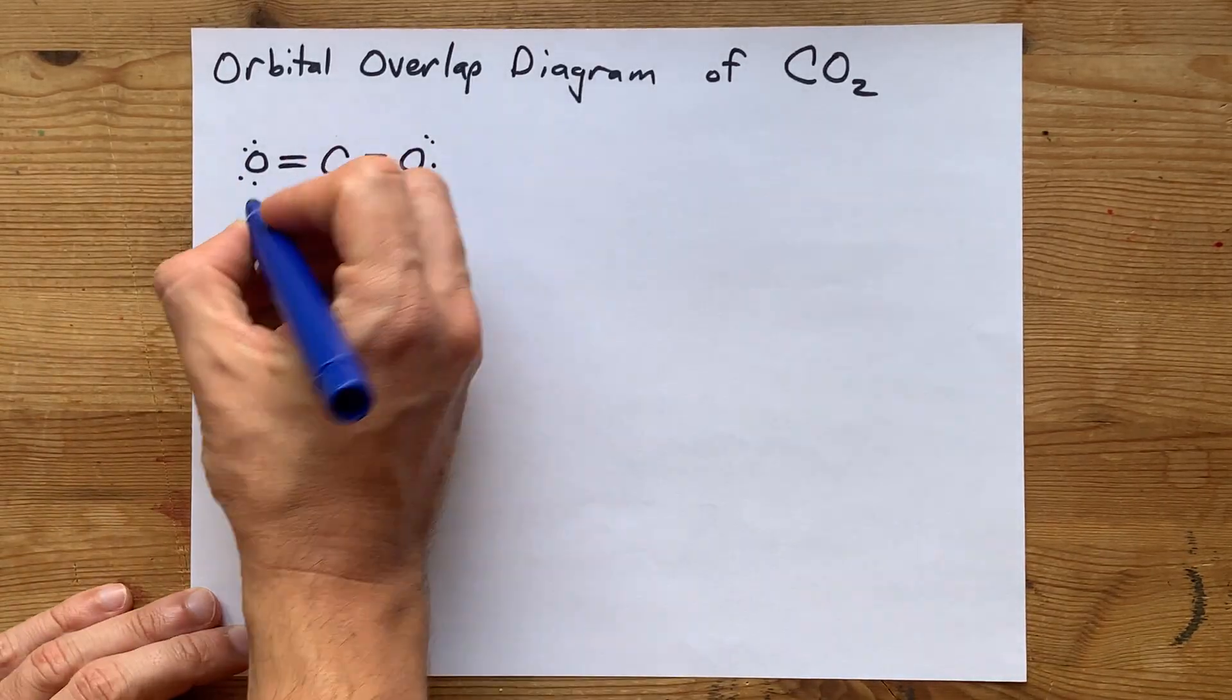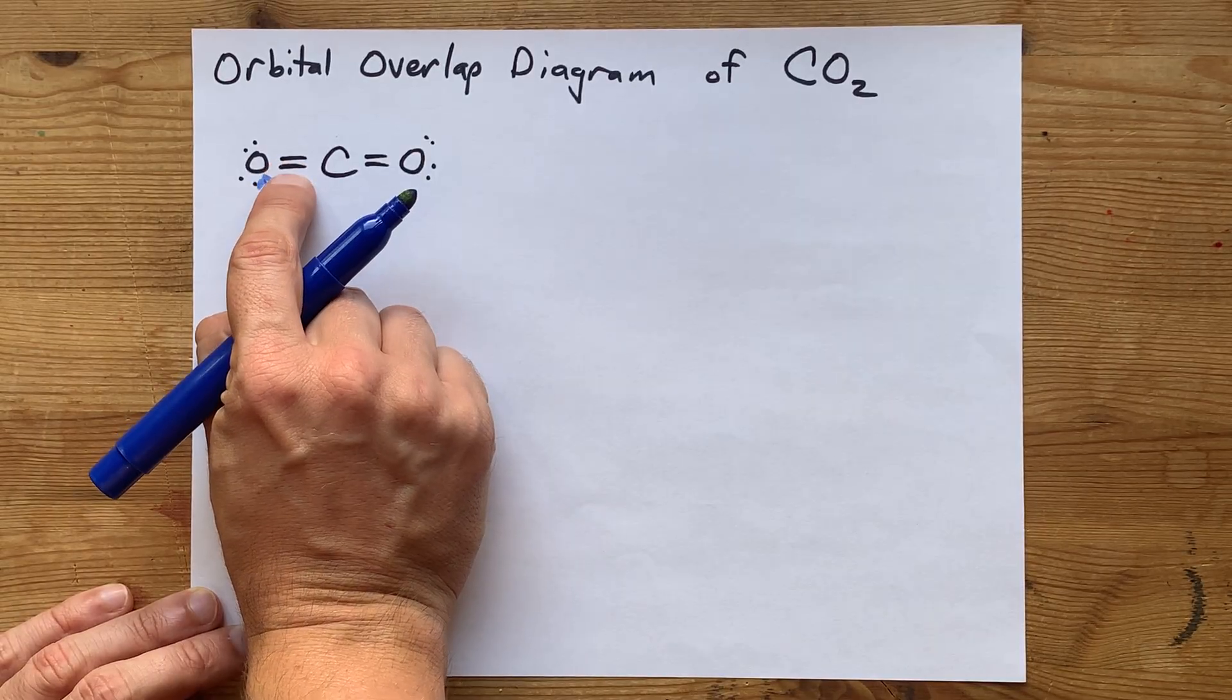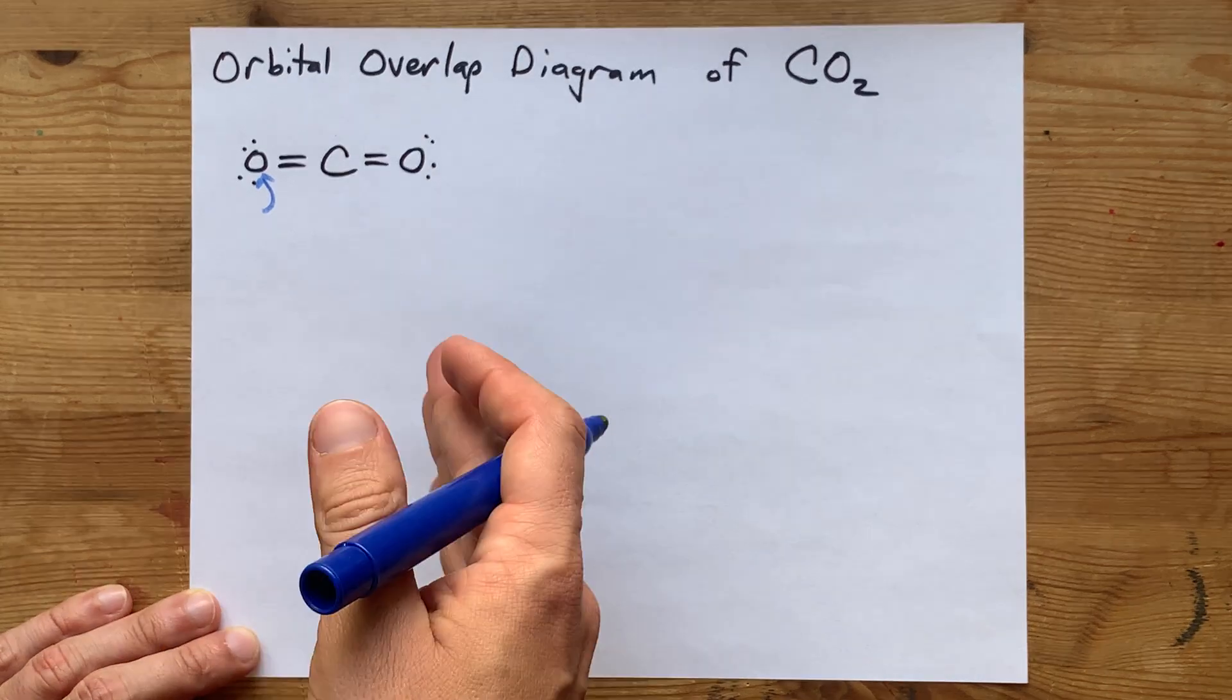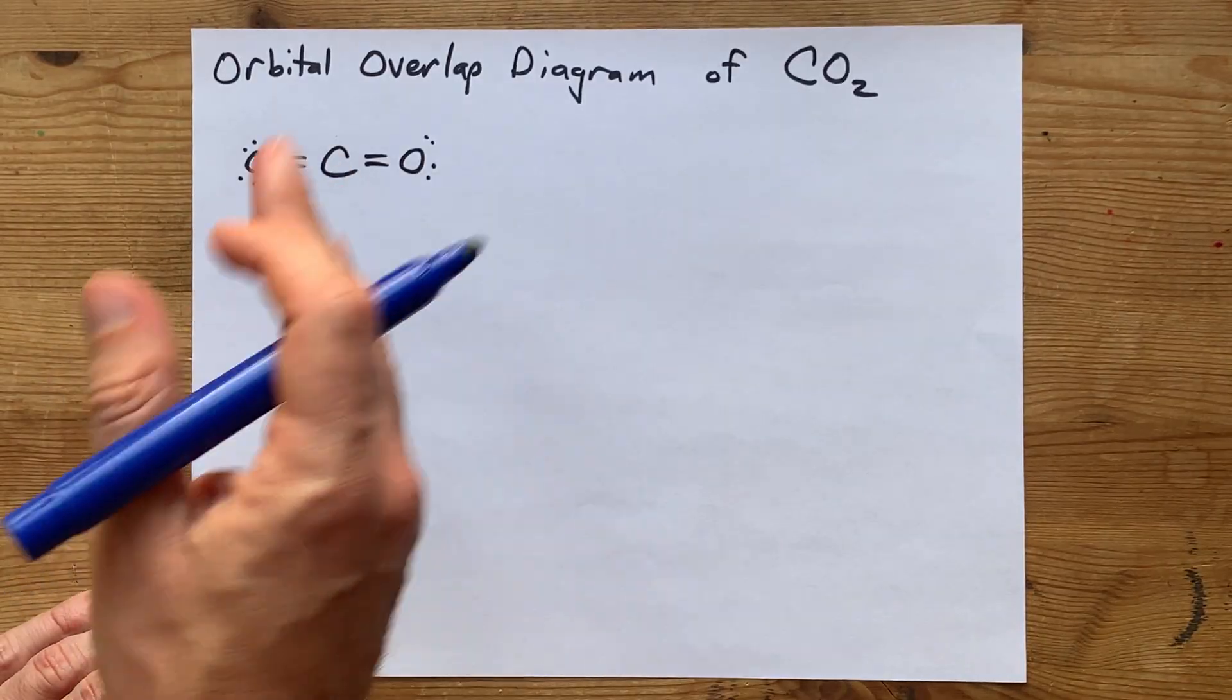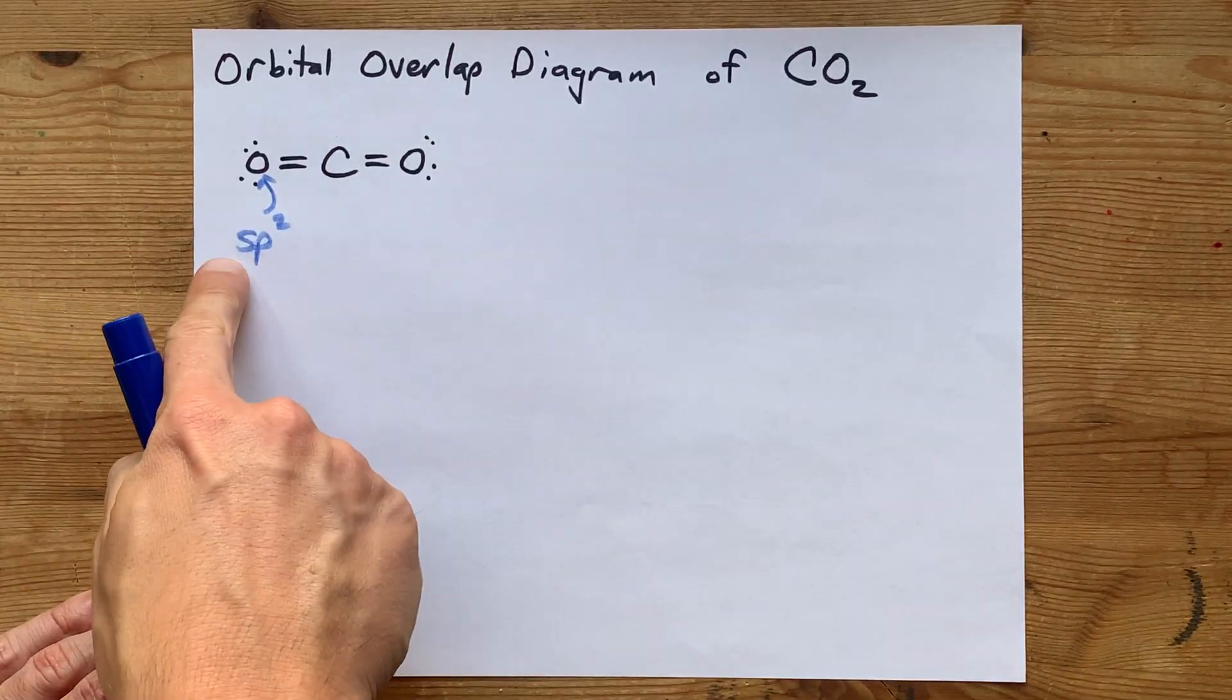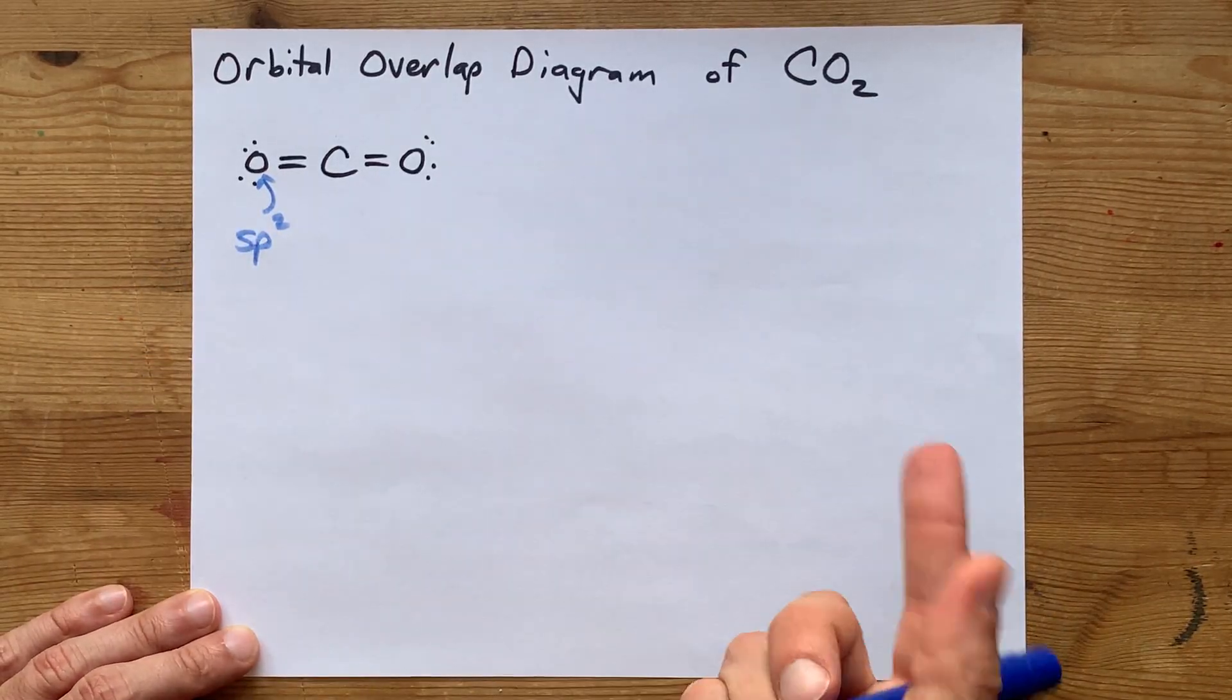Now the oxygens each have a single pi bond. There's a sigma bond between them, and then the second bond between the oxygen and the carbon is pi. That means there's one p-orbital left over after the oxygen hybridizes. That means that the oxygen is sp2 hybridized. That's s with two of the p-orbitals, but not the third.